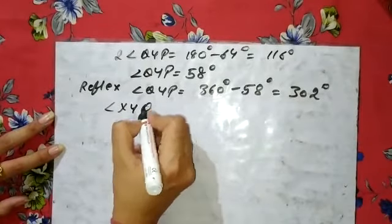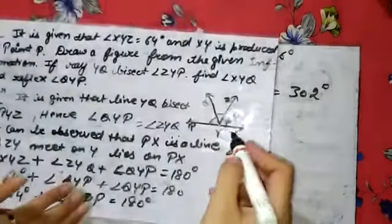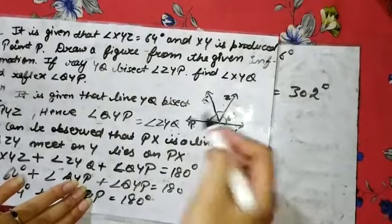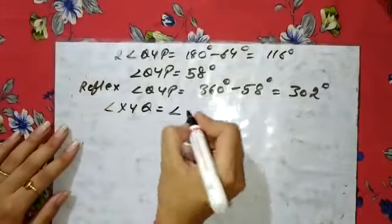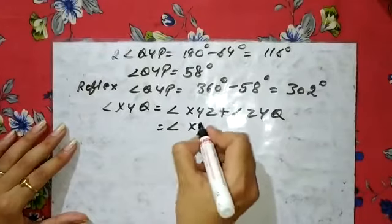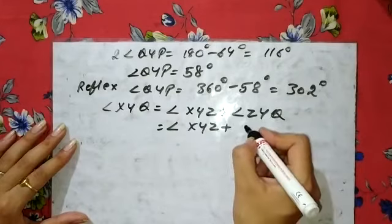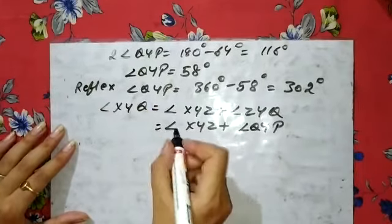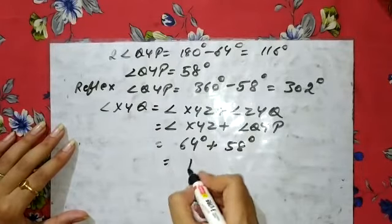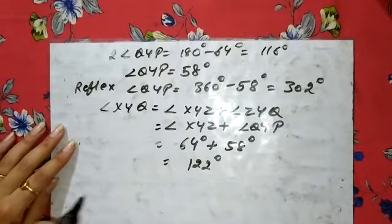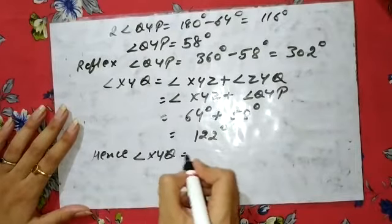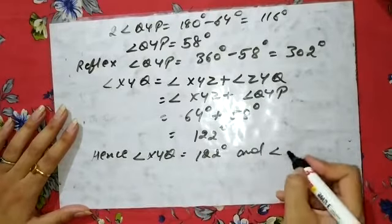After that, angle XYQ — see, this equals angle XYZ plus angle ZYQ. And since ZYQ equals QYP, we can write: angle XYZ plus angle ZYQ equals 64 degrees plus 58 degrees, which gives angle XYQ equal to 122 degrees.